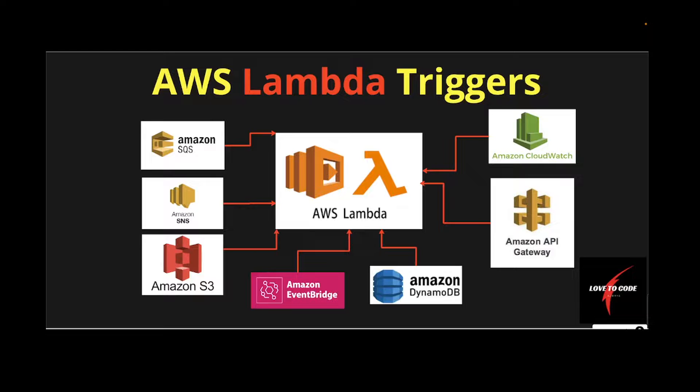For example, if we talk about S3 — let's say you want to integrate S3 with Lambda — when a new object comes to S3, S3 automatically triggers the Lambda function, which gets all the information about the new object just pushed to S3. That's one common scenario. Same way with SQS and SNS. In this tutorial we're going to go through each scenario — around six to seven scenarios — and show how to integrate with Lambda.